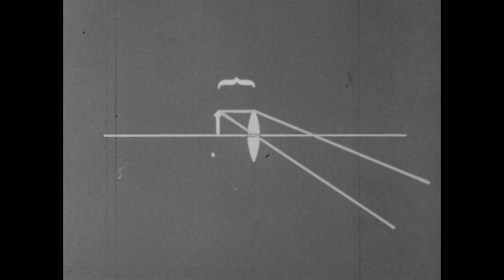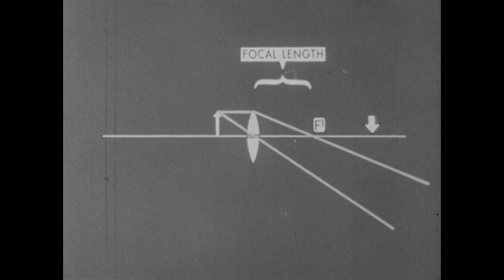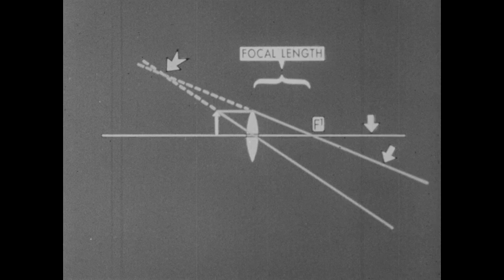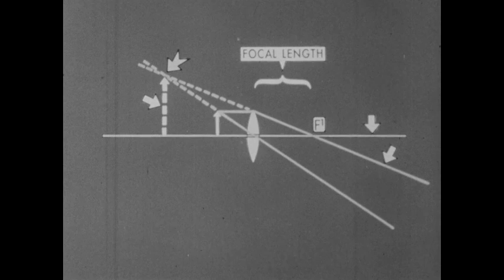When we moved the object closer to the lens than the focal length, there was no image on the screen. The rays did not converge here, but they do converge here, so that when we looked through the lens, we saw the image, an upright, virtual image.